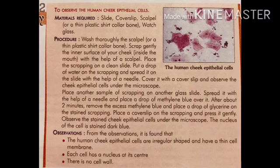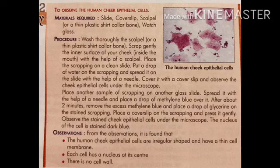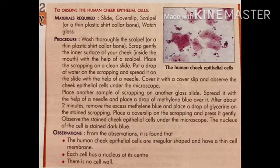Let us start this chapter with Activity 2 from your book: to observe the human cheek epithelial cell. Materials required: slide, cover slip, scalpel or a thin plastic shirt collar bone, watch glass. Procedure: wash the scalpel thoroughly, then scrape gently the inner surface of your cheek inside the mouth with the help of a scalpel.